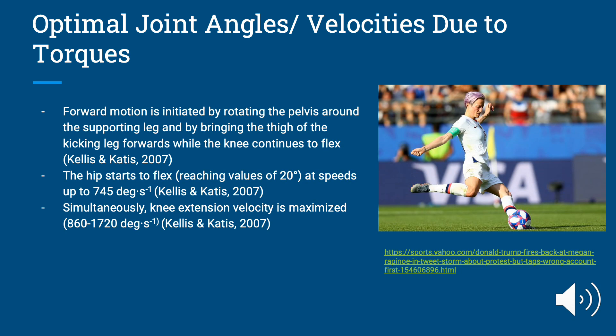Next, we're going to go on to leg acceleration. We're skipping over leg cocking because leg acceleration is what's really contributing to the torque about the hip and the knee, which goes into kicking the actual ball. The forward motion is initiated by rotating the pelvis around the supporting leg and by bringing the thigh of the kicking leg forwards while the knee continues to flex. You can see this in the picture of Megan Rapinoe — her thigh is coming forward and is almost even with her other leg, but her knee is still flexed with her shank behind her.